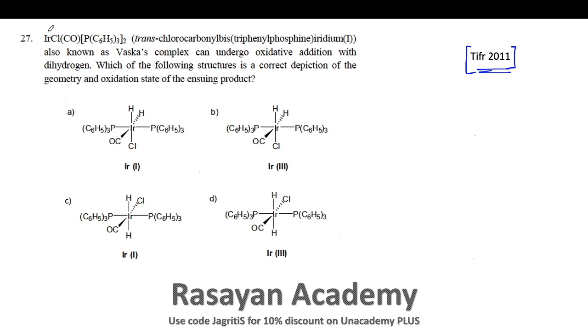Let's start discussing this complex which is given over here from the 2011 TIFR question. The complex iridium trans-chloro carbonyl bis triphenyl phosphine iridium one, which is basically your Vaska's complex, can undergo oxidative addition with dihydrogen. You are adding the hydrogen molecule to Vaska's complex.